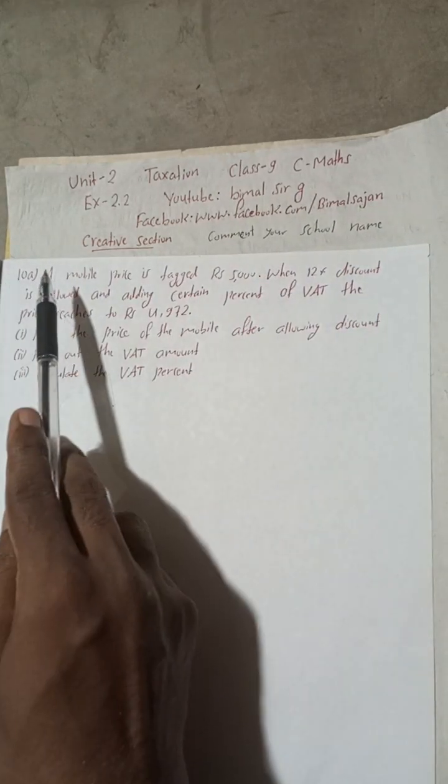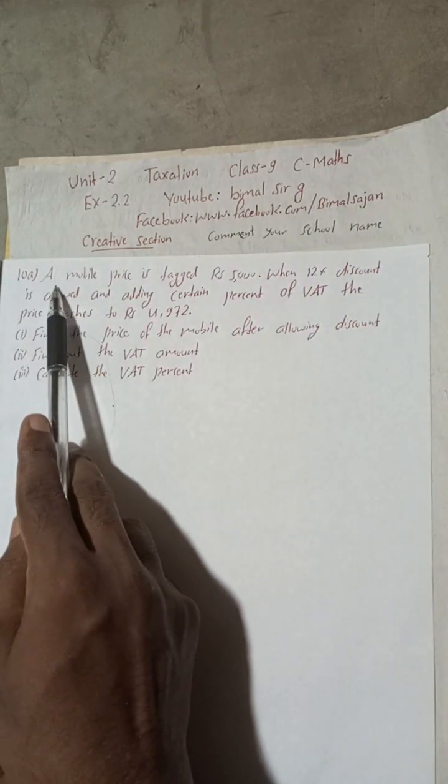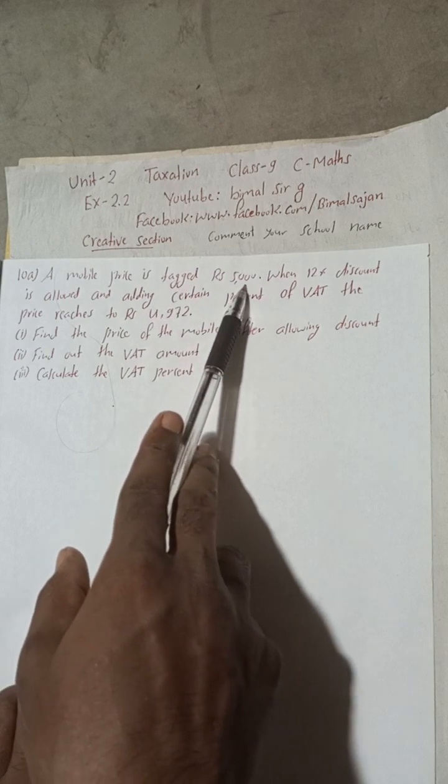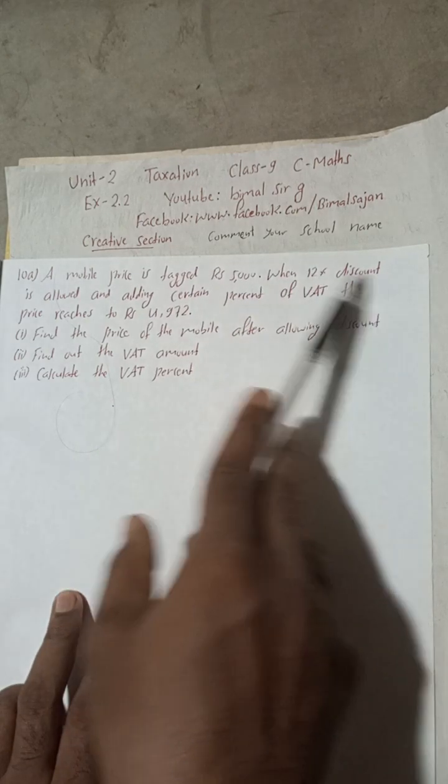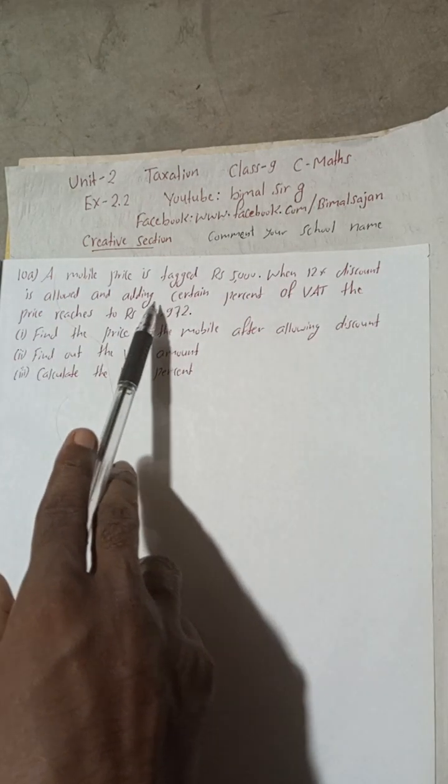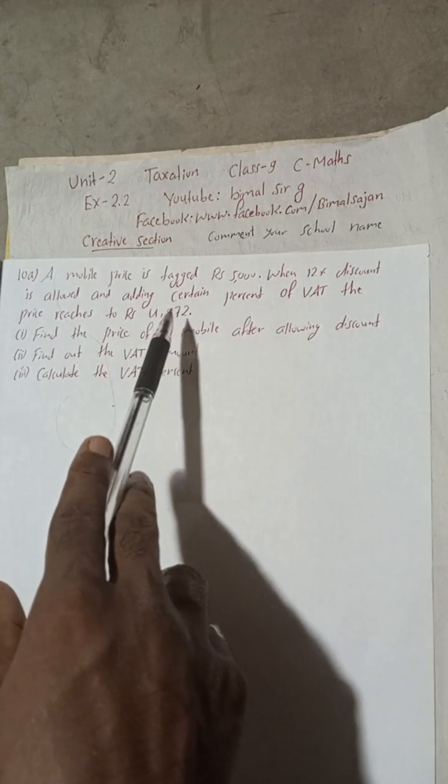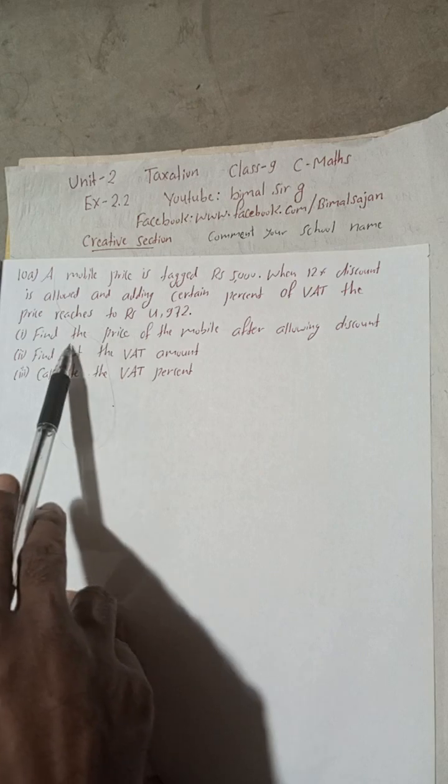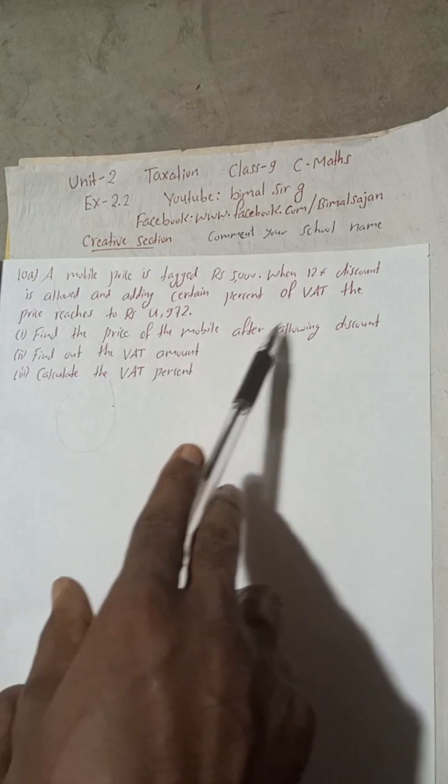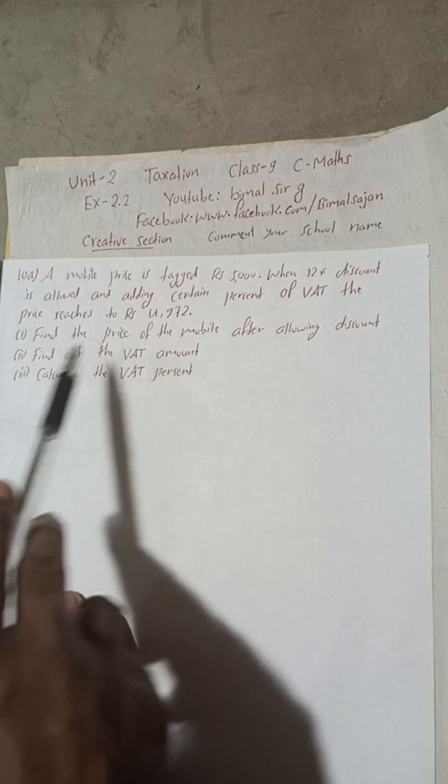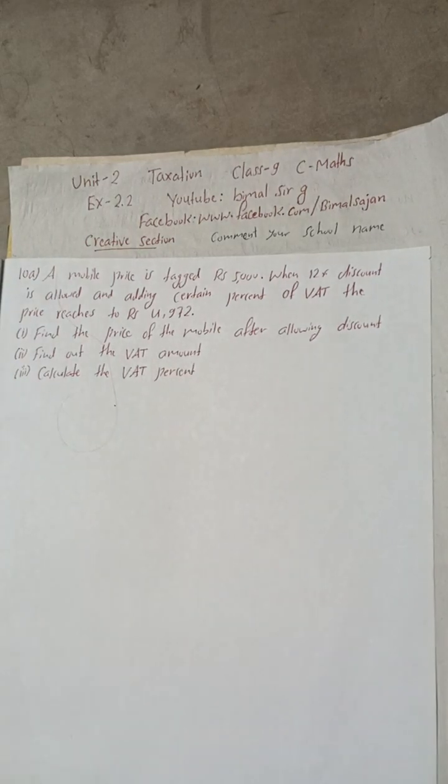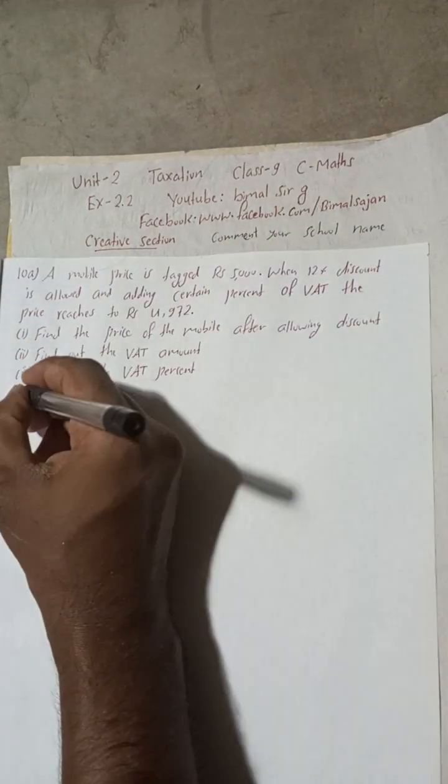Students, if you find this video useful, then comment your school name from where you are. So, the solution. Let's begin. Question 10a: A mobile price is tagged Rs 5000. When 12% discount is allowed and adding certain percent of VAT, the price reaches Rs 4972. Number one, find the price of the mobile after allowing discount. Number two, find out the VAT amount. And number three, calculate the VAT percent. Solution, here is now.